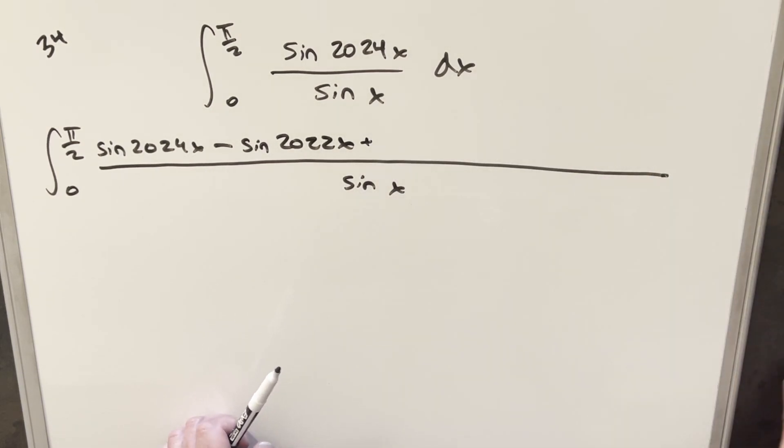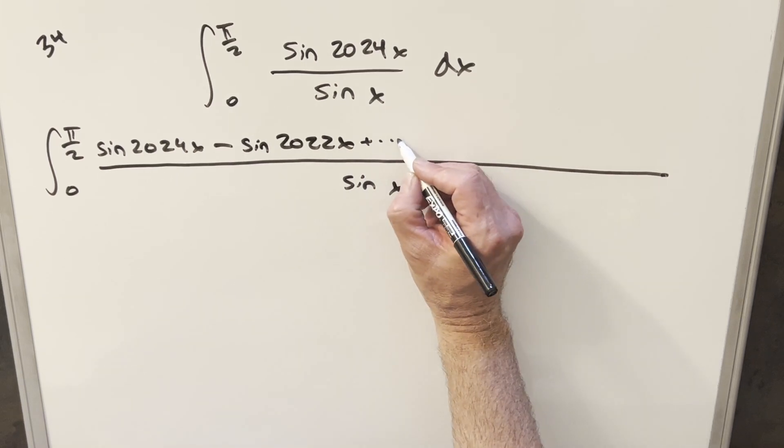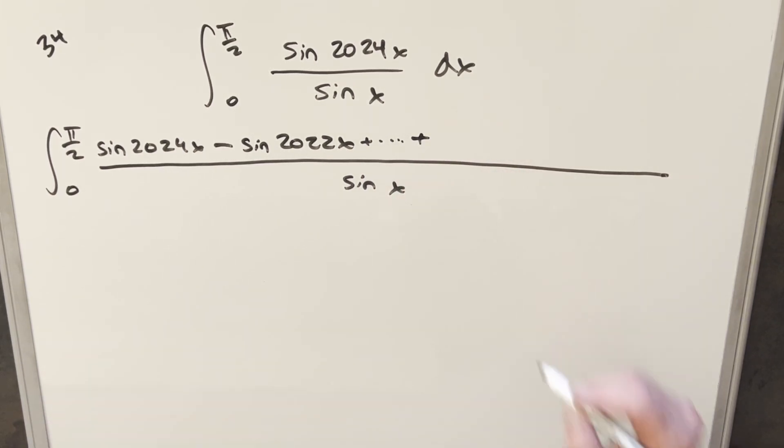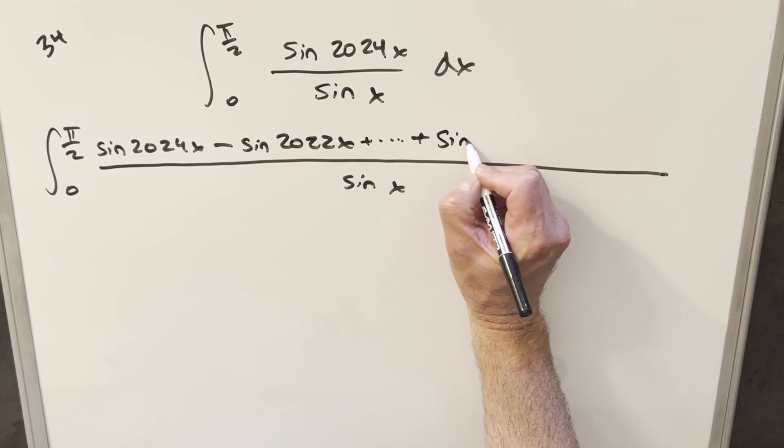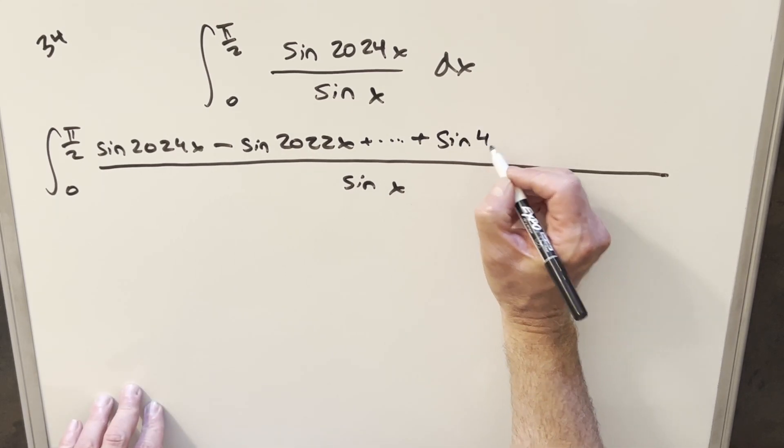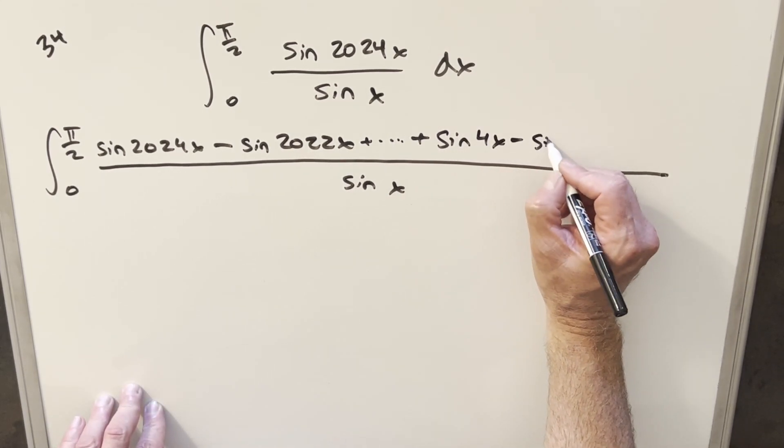So we would have that one, but then let's just do a bunch of dots so we can get down to the bottom of it. And then eventually, after doing this a million times, we get to sin 4x minus sin 2x.